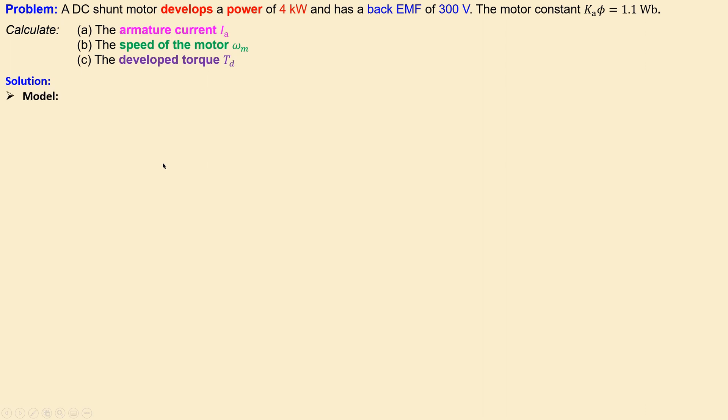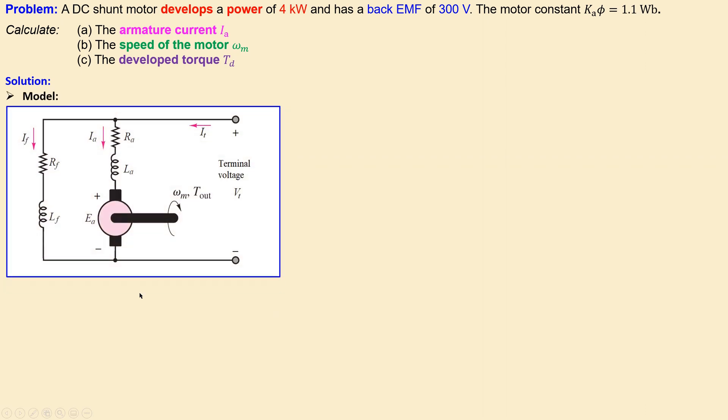So DC shunt motor will have this model. This is the armature part of this DC motor - you can see the armature resistance, armature inductance, and also the back EMF part of the system. And we have also the field part which is the field resistance and also field inductance. Of course we won't use all of this in this exercise but it's helpful to see that also here.